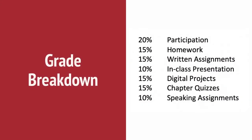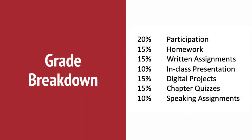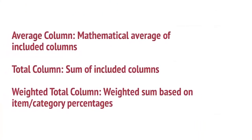Next, take a look in your syllabus for a grade breakdown. This will help you decide which total column to use to calculate the course grade. In this example, there are categories with weighted percentages. For the course grade, you can choose from the following: an average column calculates the mathematical average of the included columns; a total column calculates the sum of the included columns; a weighted total column weights the sum based on item percentages.